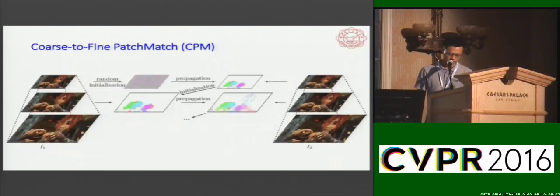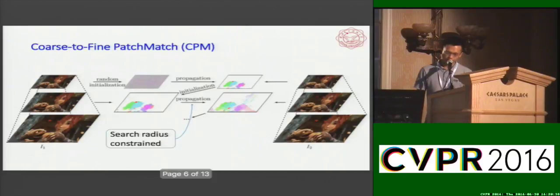Unlike the state-of-the-art matching method, DeepMatching, which constructs the response map of each reference patch on the target image at each level of the pyramid, the proposed method avoids the construction of the whole response maps. The secret is to constrain the random search radius within a small range.